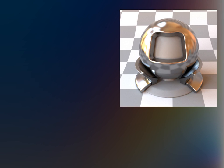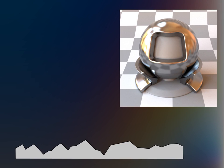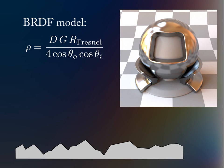Most glossy material models in graphics are based on the microfacet theory, which assumes a distribution D of mirror-like facets at a microscopic scale. Colors are solely due to the reflectance term R, which is computed using Fresnel's equations.